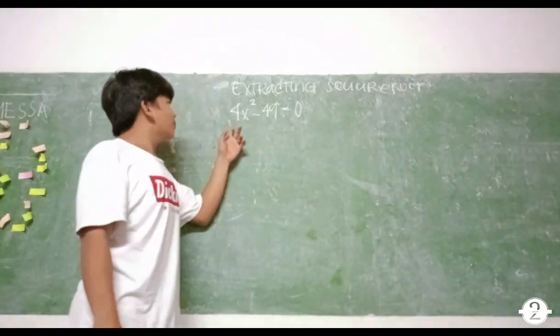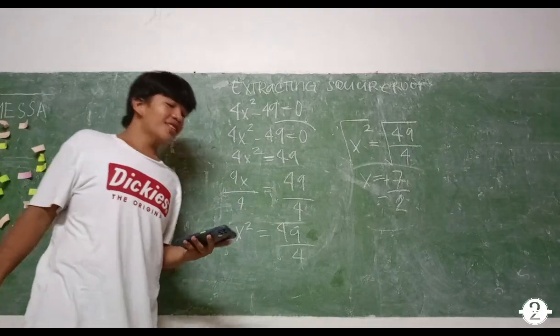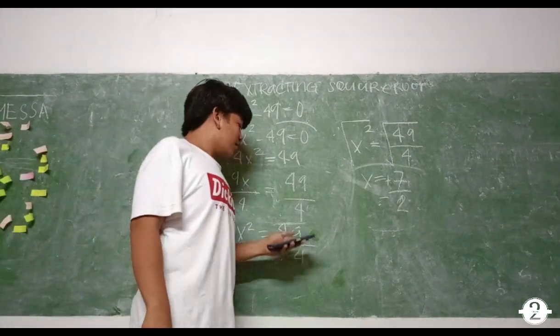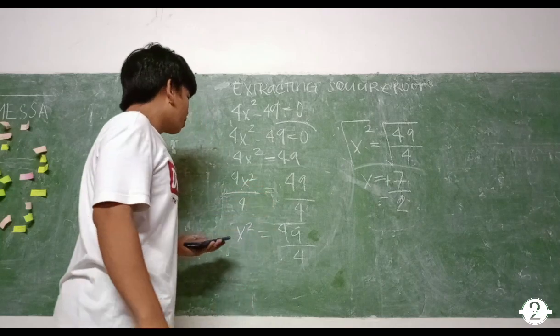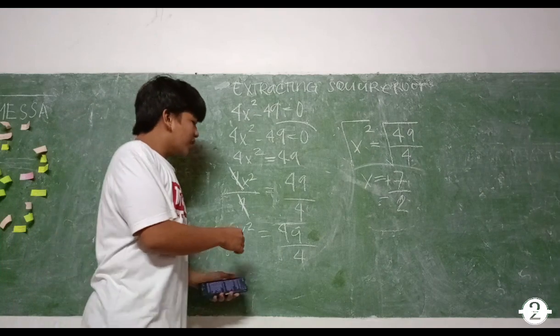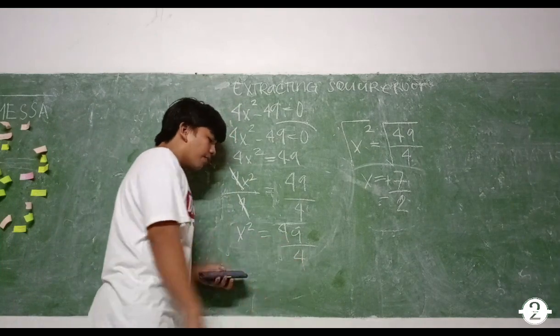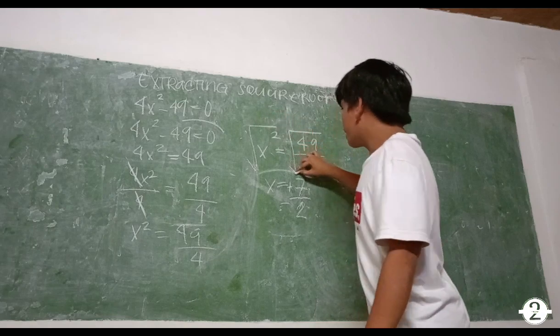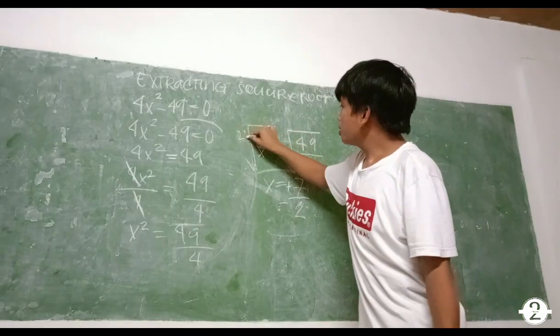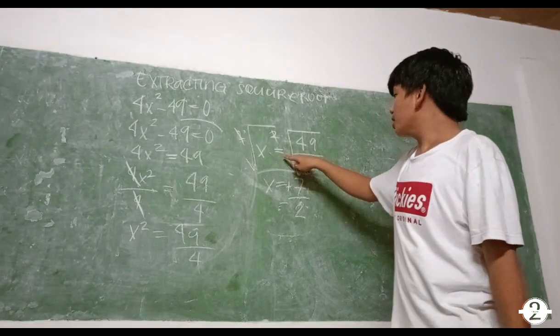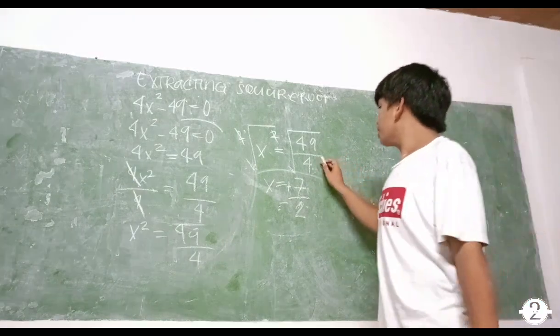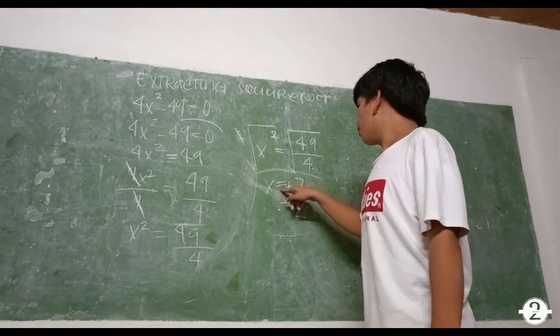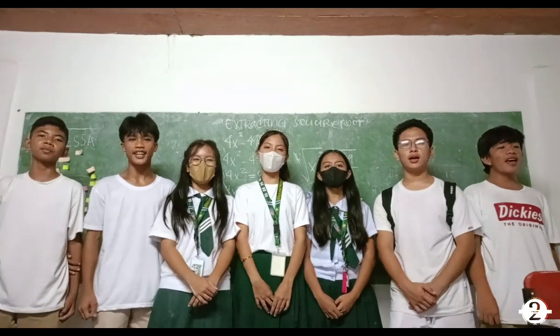Para naman sa second example, our given is 4x² - 49 = 0. First step, ilipat natin ng 49 sa kabila, magiging 4x² = 49. Turn the given into fraction, so kung ano yung nasa unahan, yun ang lalagyan natin din dito. I-cancel natin yung 4, so matitira na lang ay x² = 49/4. Kunin naman natin yung x² equals, lalagyan natin ng isang radical. Lalagyan natin ng isang square root yung isang radical, tapos i-cancel natin. So yung matitira na lang ay x = √(49/4). Kunin natin ang square root ng 49 is 7 at ang square root ng 4 is 2. Maging final answer natin ay x = ±7/2.